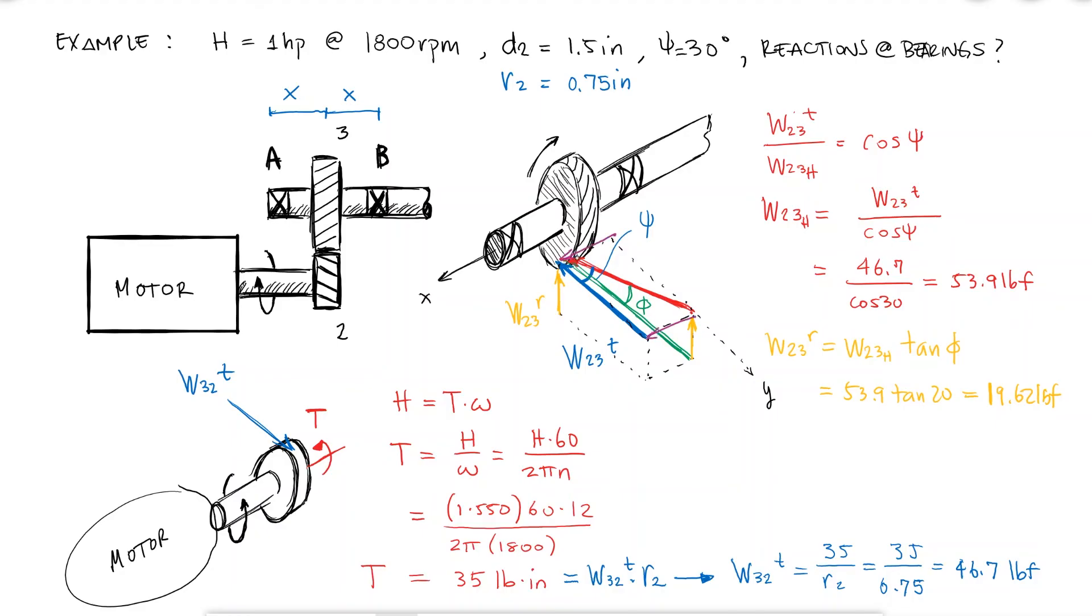The axial component could be found from the blue and red triangle. A triangle with a psi angle and an adjacent side w23t. This axial component is what we know as the thrust.